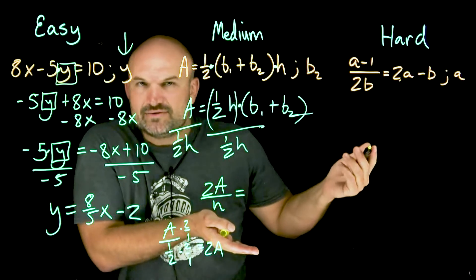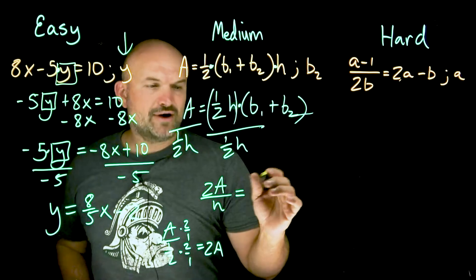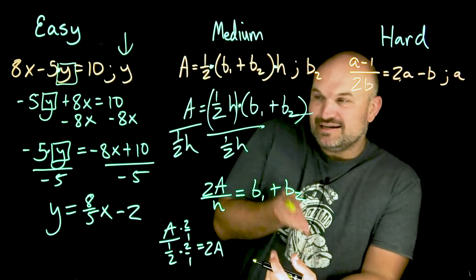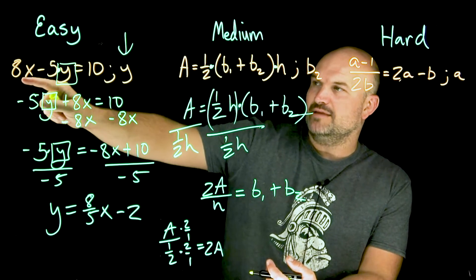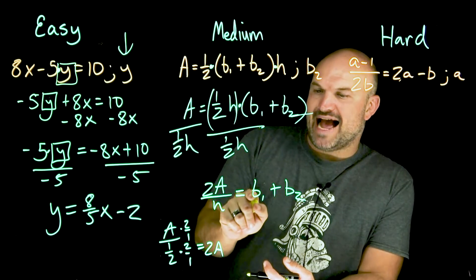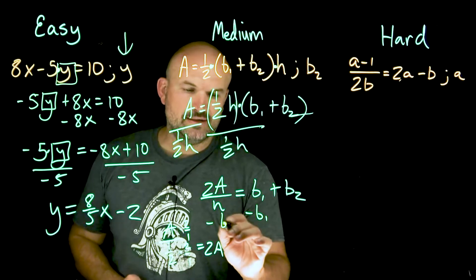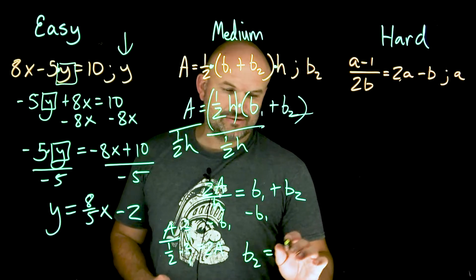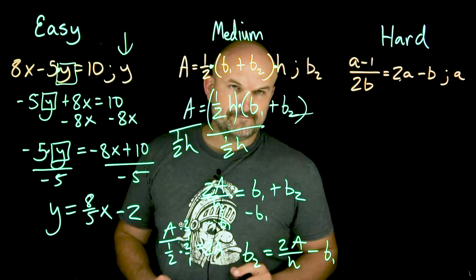Well, guess what, guys? I don't really need the parentheses, right? Because the parentheses was only there to multiply by the one half h. So therefore, I can rewrite this as a b1 plus b2. And then again, just like we did over here, remember how I rewrote this as a positive 8x? That's telling me I'm adding that 8x to my variable. The same thing over here. I have a b2. Well, it's being added by a b1. So to solve for b2, I'm gonna subtract a b1 on both sides. And therefore, I'm gonna finally have a b2 is equal to a two a over h minus a b1. And voila.